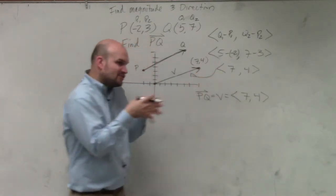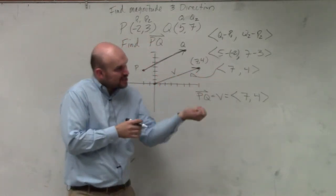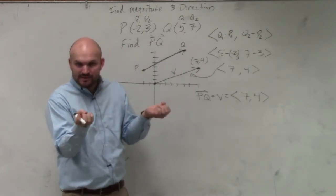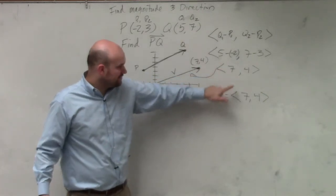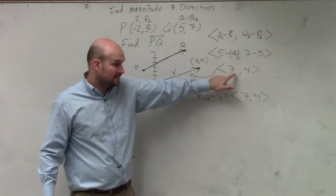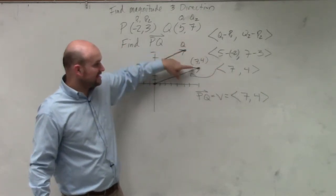This is a vector, a directed line segment. It has a starting and an ending point, right? Initial and terminal. It starts here, ends there. That's the vector V, 7 comma 4, in component form. 7 comma 4 is just a coordinate point. You guys see the difference?